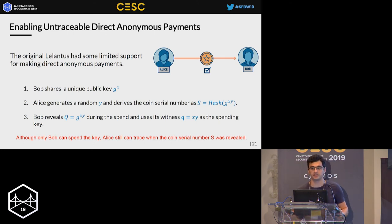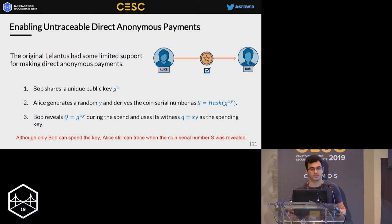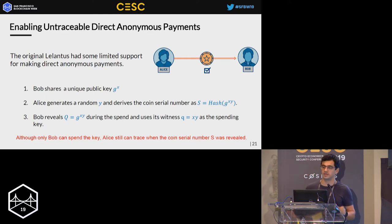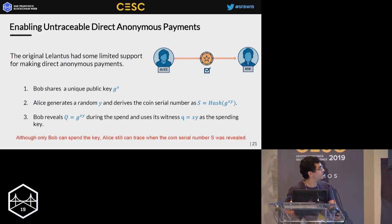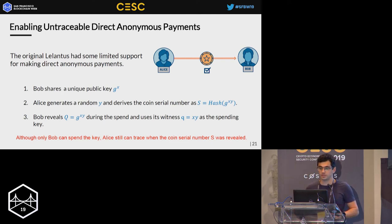Let's see how we enable direct anonymous payments — how the sender can create coins spendable only by the intended recipient. The original Lelantus design had limited support: every time Alice wanted to send coins to Bob, they engaged in a Diffie-Hellman-like key exchange. Bob published his public key, and Alice used it to generate a common shared secret, which was hashed to generate the coin serial number.